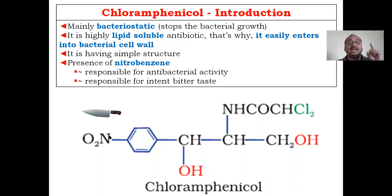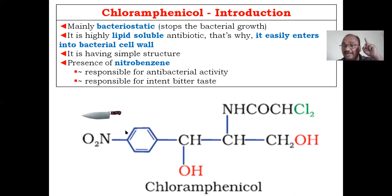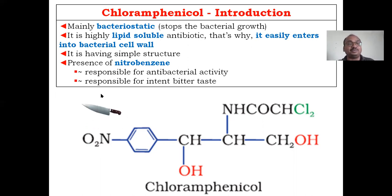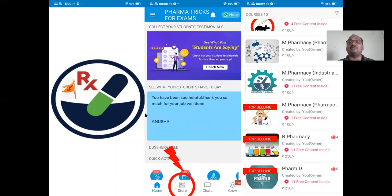The structure consists of a nitrobenzene group — here you can see this is a benzene ring with a nitro group attached, not an amino or nitrogen group. This nitrobenzene is mainly responsible for two things: the antibacterial activity and the intensely bitter taste of chloramphenicol. The nitro group is responsible for both the antibacterial activity and the intense bitter taste.